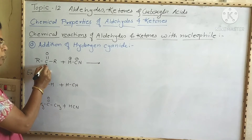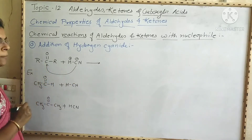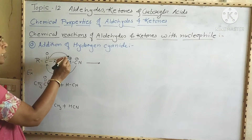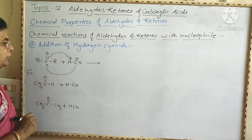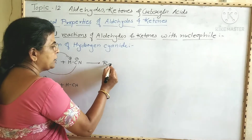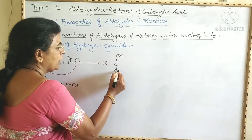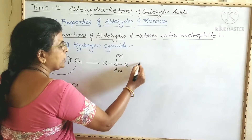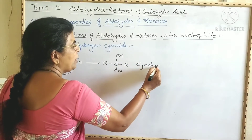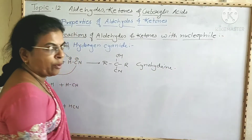The carbonyl carbon is positively charged, therefore the CN⁻ gets attached to this carbonyl carbon and the H⁺ gets attached to the oxygen atom, to form R-C(OH)(CN)-R. This product is called cyanohydrin, or the cyanohydrin addition product.